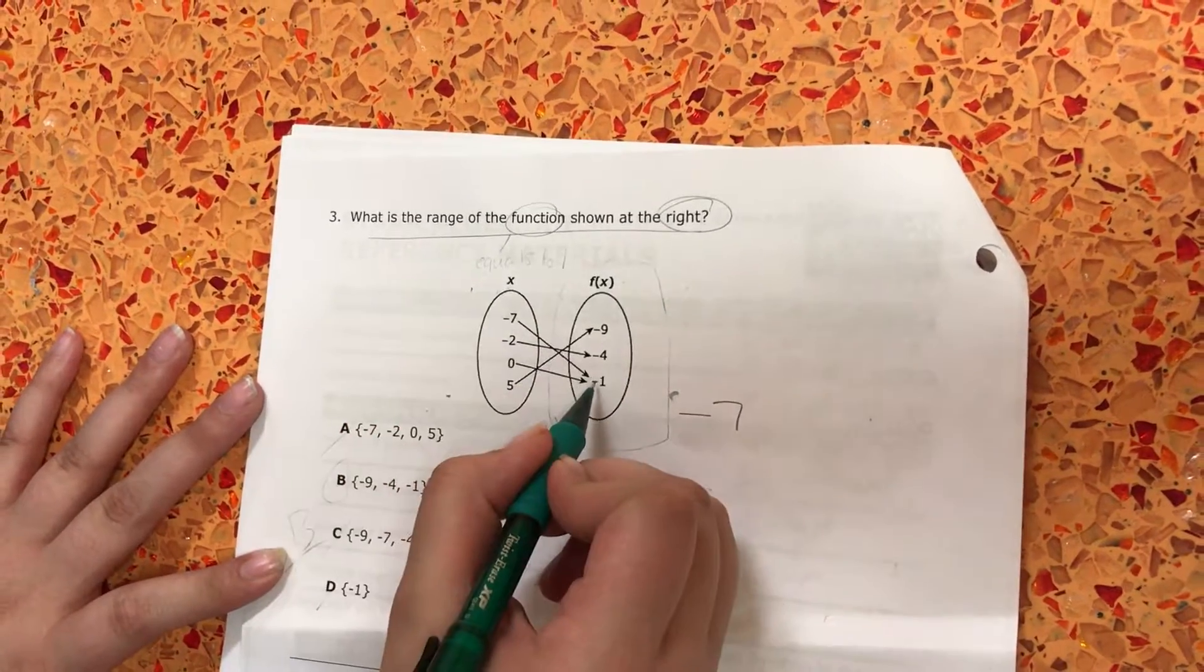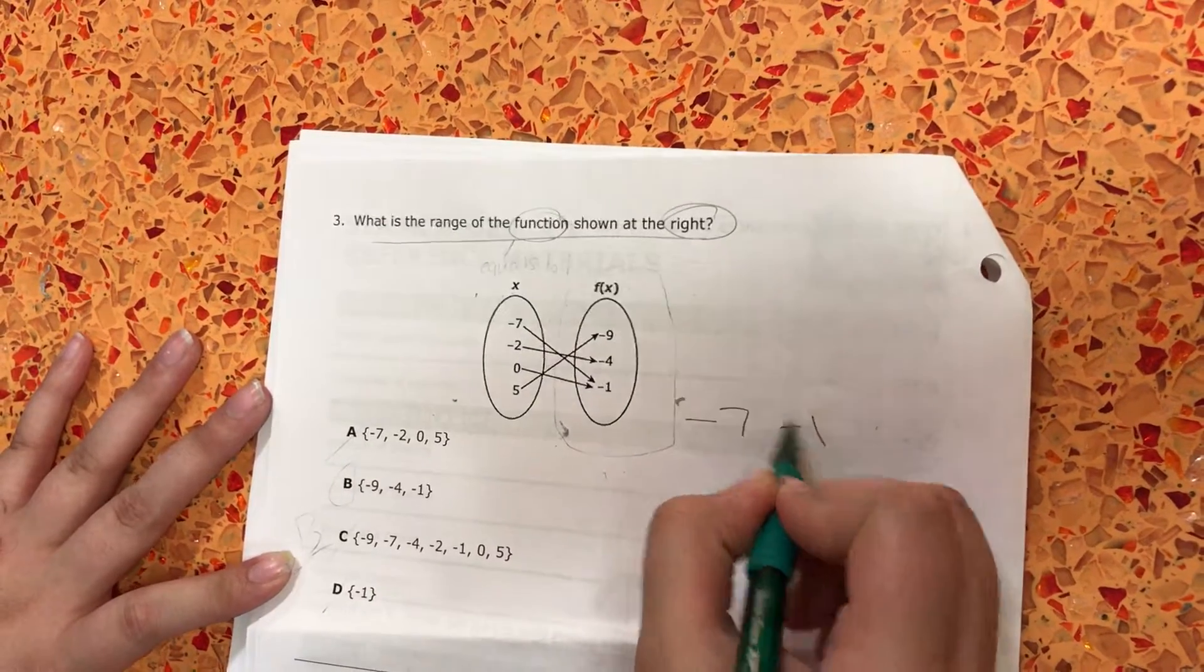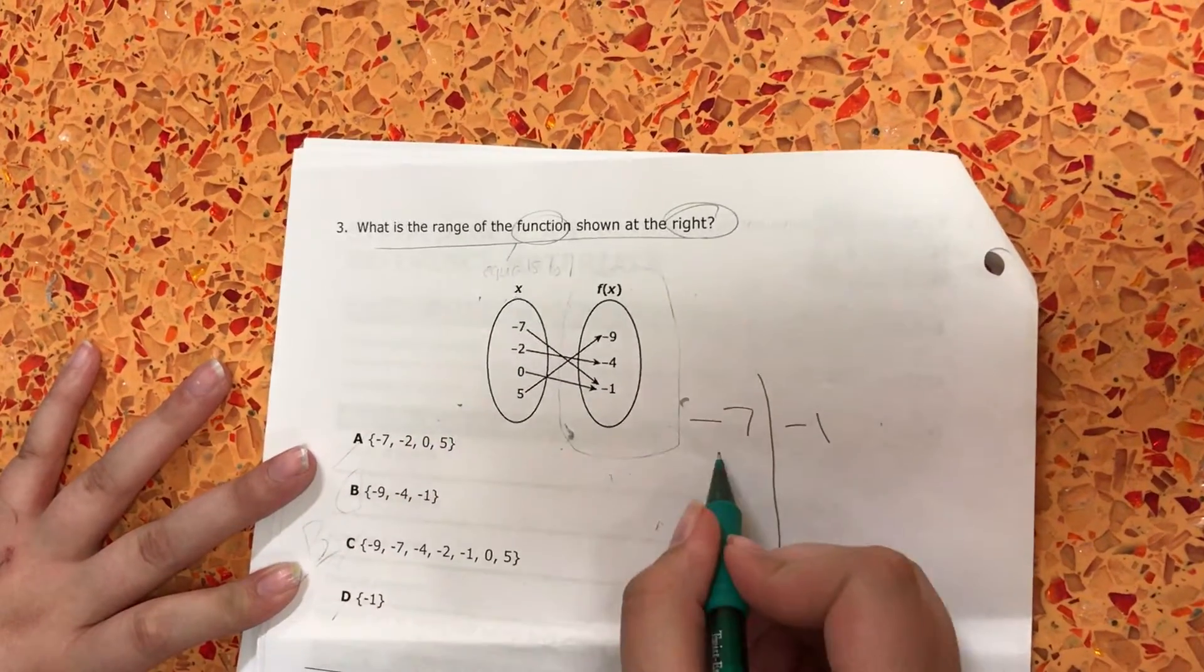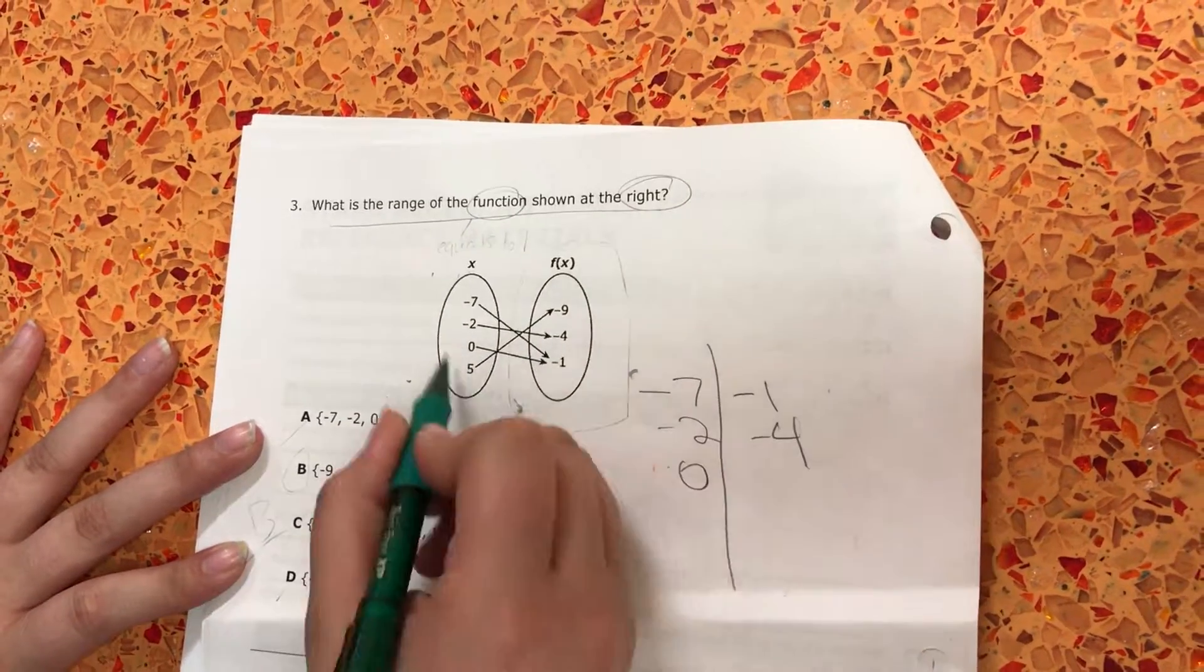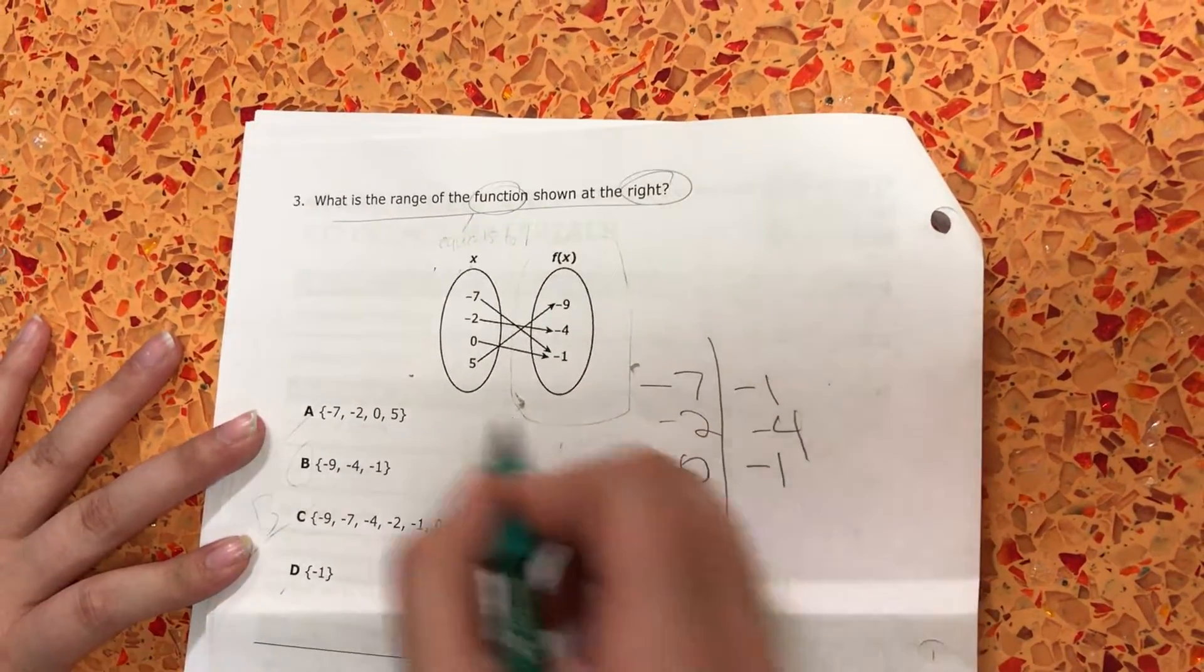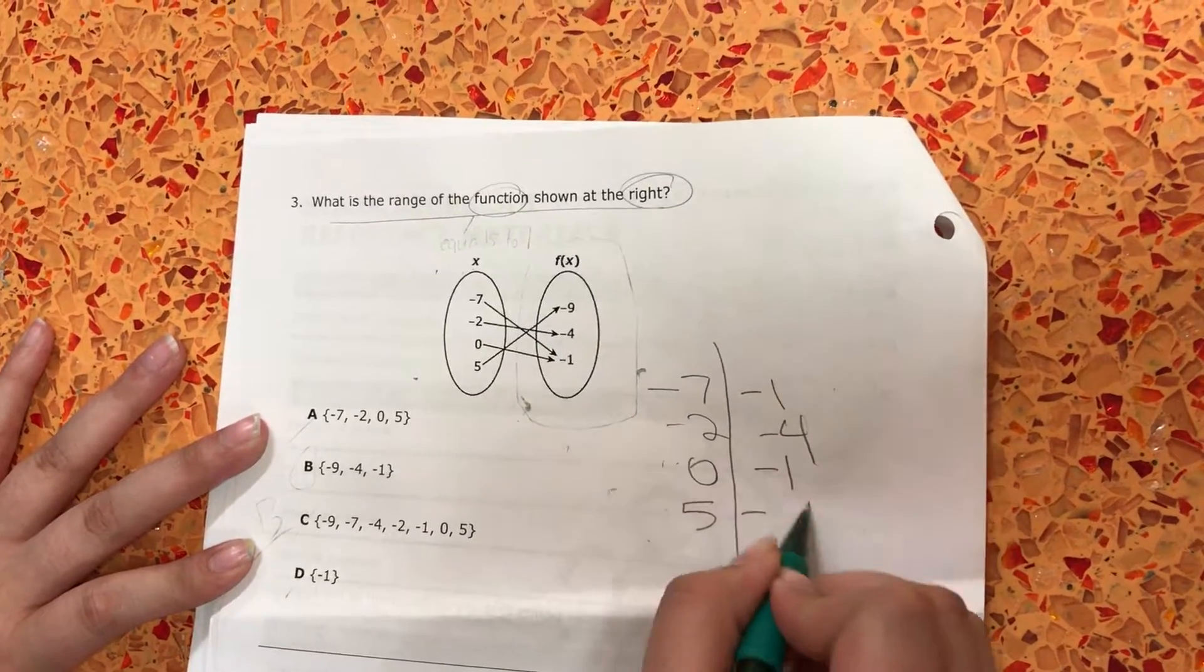So negative 7 goes with negative 1. Negative 2 goes with negative 4. 0 goes with negative 1. 5 goes with negative 9.